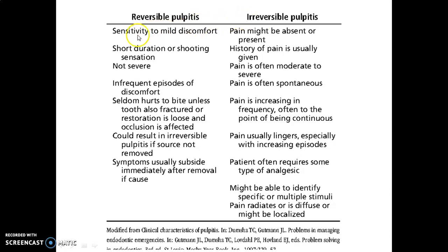In reversible pulpitis, the patient is sensitive to mild discomfort; in irreversible, pain may be present or absent. In reversible pulpitis, pain is of very short duration, not that severe, and episodes are infrequent. In irreversible, there is a history of pain that can be moderate to severe and is often spontaneous. Reversible pulpitis seldom hurts to bite unless the tooth is fractured or a restoration is loose affecting occlusion. In irreversible, pain increases in frequency, often becoming continuous.